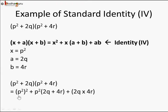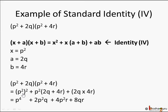So (p²)² = p⁴. Then using the distributive law, open the bracket: p² × 2q = 2p²q, and p² × 4r = 4p²r. Multiply 2q × 4r: 2 × 4 = 8, q × r = qr, so it becomes 8qr. The answer is p⁴ + 2p²q + 4p²r + 8qr.